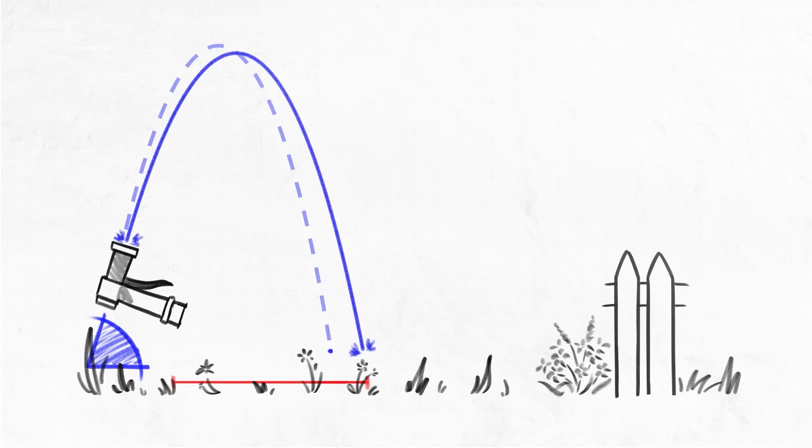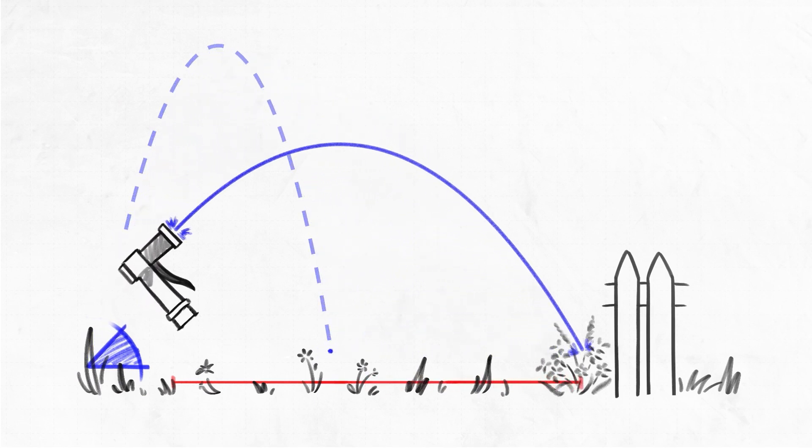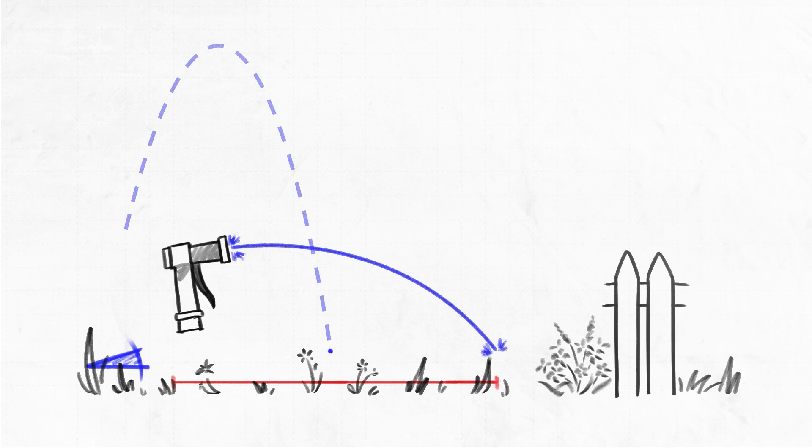So then we lower our arm back down, bring that flight back lower and lower, but eventually we lose distance because that water jet's coming out too low.